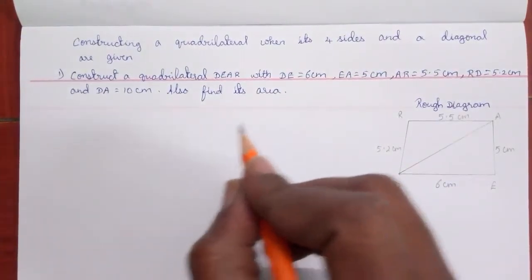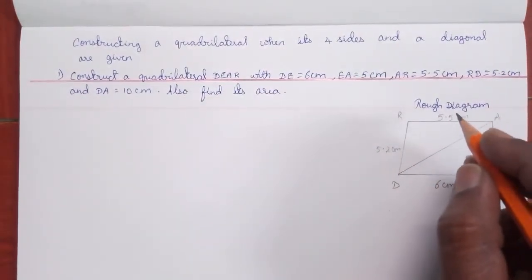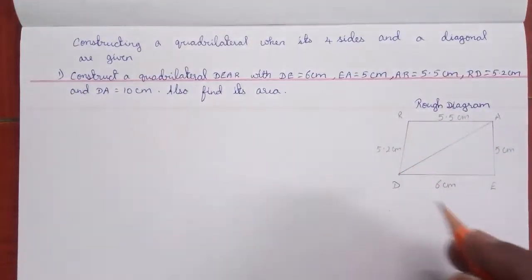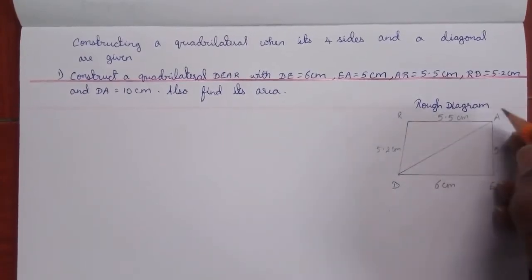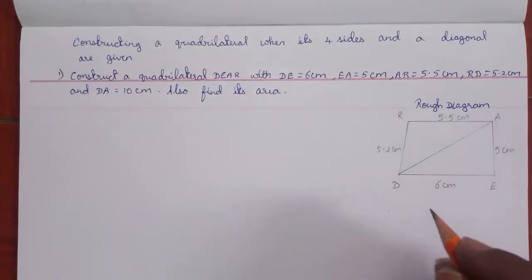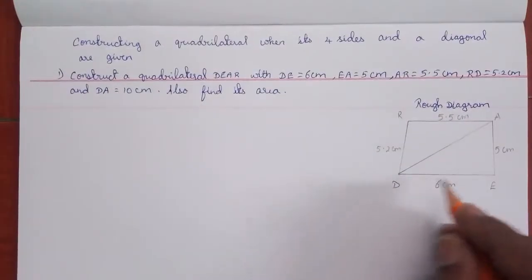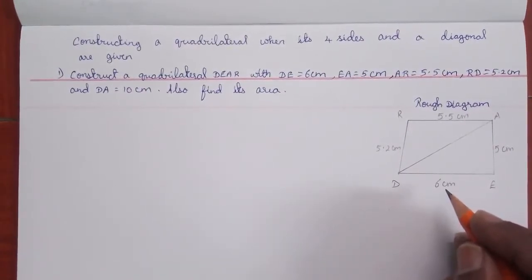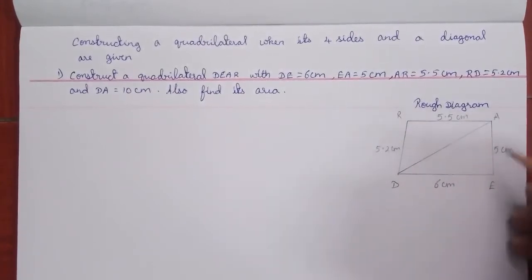First, to construct the quadrilateral, you need to draw a rough diagram. Mark the vertices D, E, A, R. On the rough diagram, DE is 6 cm and EA is 5 cm.